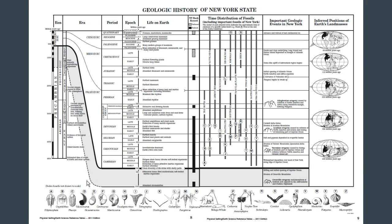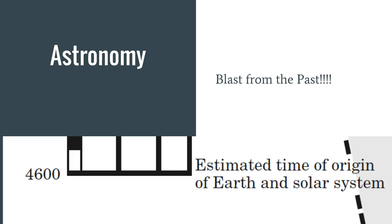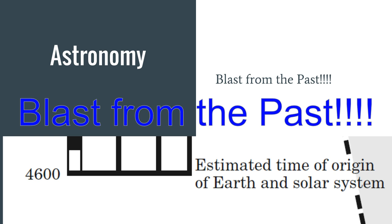What better way to start it off with a little blast from the past. That would be very difficult to see from that vantage point, but you can look on your reference table or through some digital wizardry we can make it a little bit bigger. You can see that blast from the past is the estimated time of origin of Earth in the solar system - hopefully that sounds very familiar to you - 4,600 million years ago.